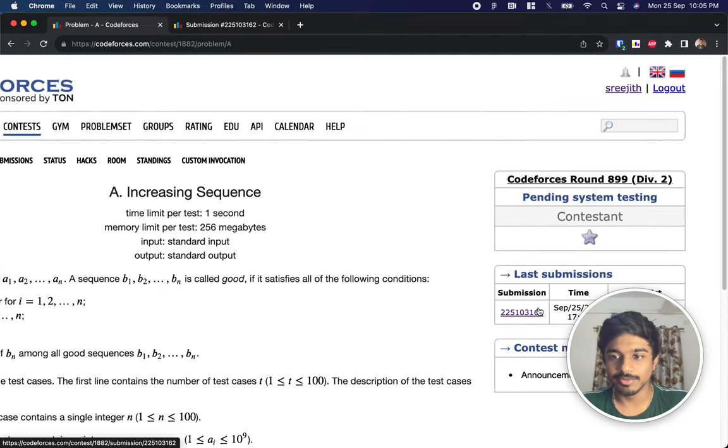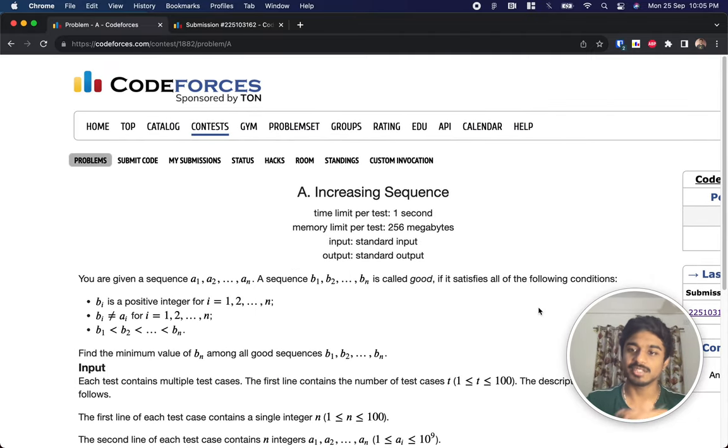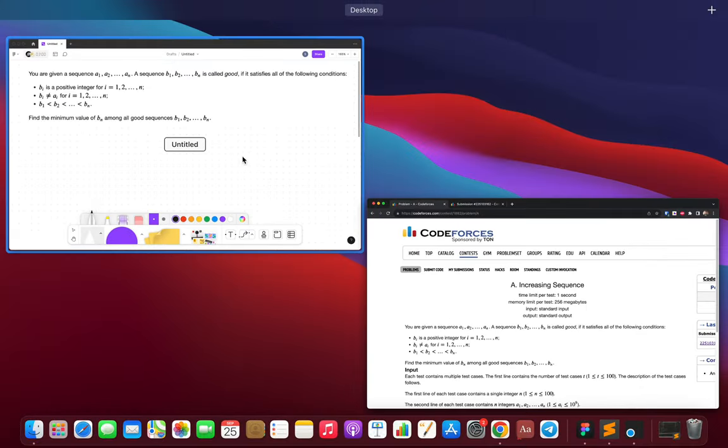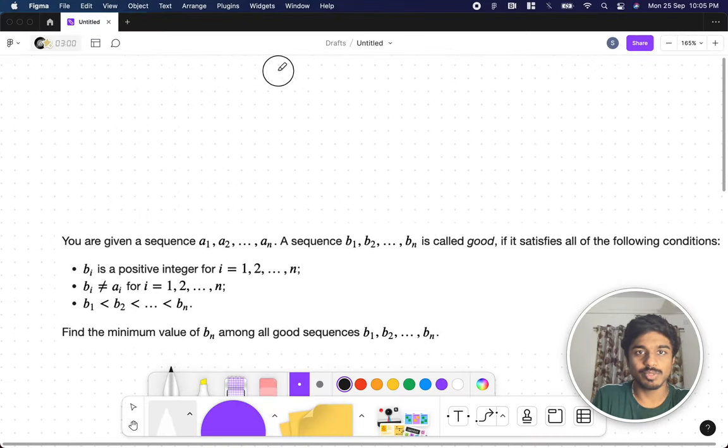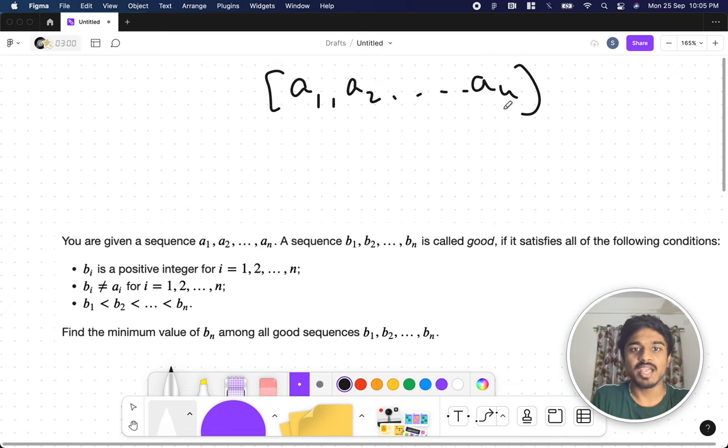Hi guys, welcome back. This is Codeforces Round 899 and we're going to solve the first problem, which is Increasing Sequence. Let's understand the problem first. We'll be given a sequence of integers, these are all integers like a1, a2, up till an.